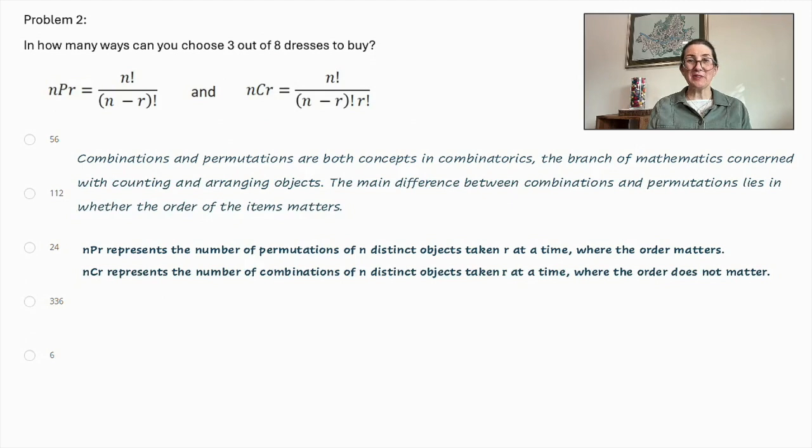Problem number 2. In how many ways can you choose 3 out of 8 dresses to buy? We've got two formulas here, but before that, let's do a little explaining.